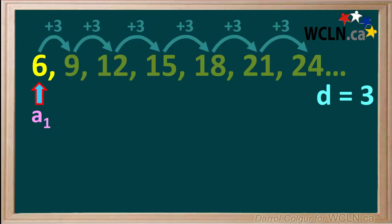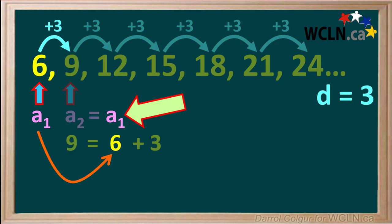Notice that the value for the first term a1 is 6. The second term a2 is 9, which is 6 plus 3, where 6 is the value for term a1.